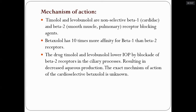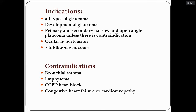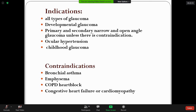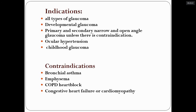Beta blockers are used in developmental glaucoma, primary and secondary narrow-angle glaucoma, ocular hypertension, and childhood glaucoma. Contraindications include bronchial asthma, emphysema, COPD, heart block, congestive heart failure, and cardiomyopathy. Examiners frequently ask about both the indications and contraindications of beta blockers.